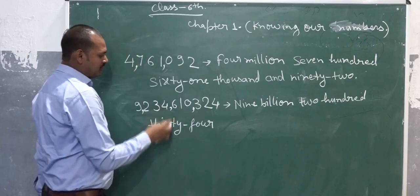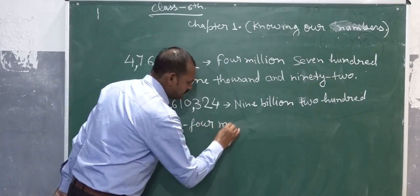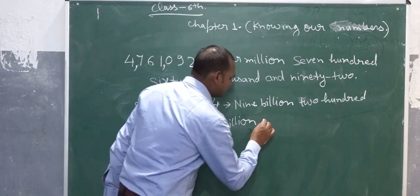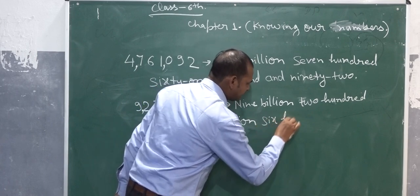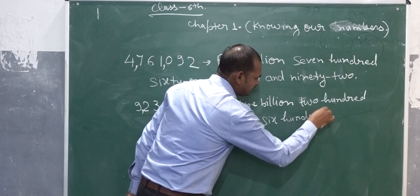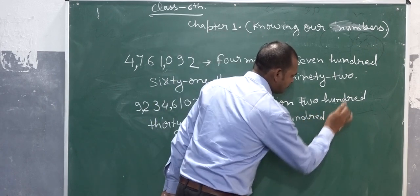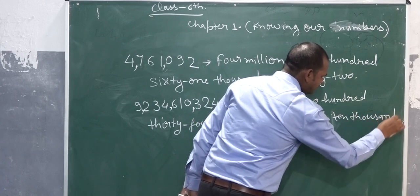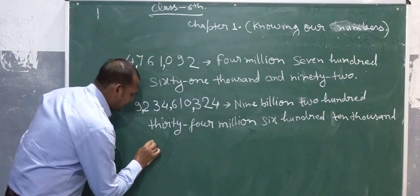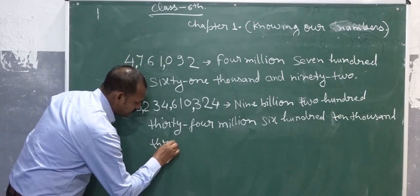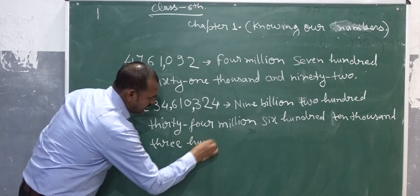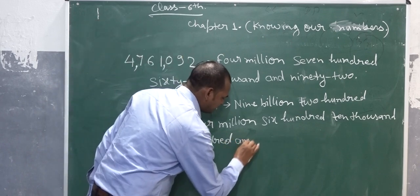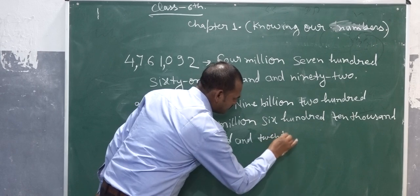What is this million? 234 million. Then 610,000. 610,000 and 300,000. 324. And 24.